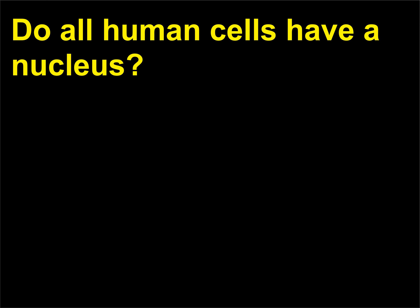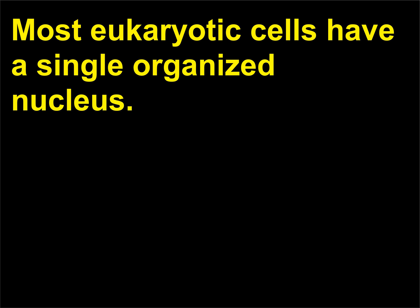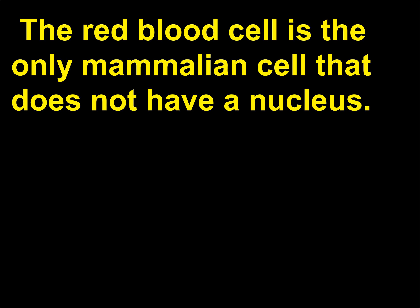Do all human cells have a nucleus? Most eukaryotic cells have a single organized nucleus. The red blood cell is the only mammalian cell that does not have a nucleus.